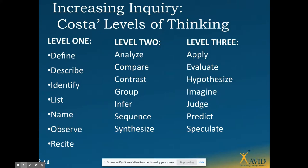The last part shows vocabulary words that Costa categorizes as level one, level two, or level three verbs. Even though a task says 'define,' which is typically a level one verb, if I'm defining in my own terms using prior knowledge and comparing and contrasting, that may actually be a level two activity. It really depends on how we gather our information.